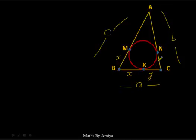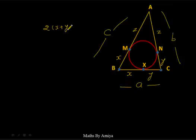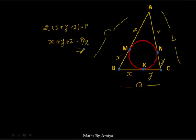For point C, if one tangent length is Y, the other is also Y. If one tangent from A is Z, the other is also Z. The complete perimeter is 2X + 2Y + 2Z. So X + Y + Z is P/2, which is the semi-perimeter S.